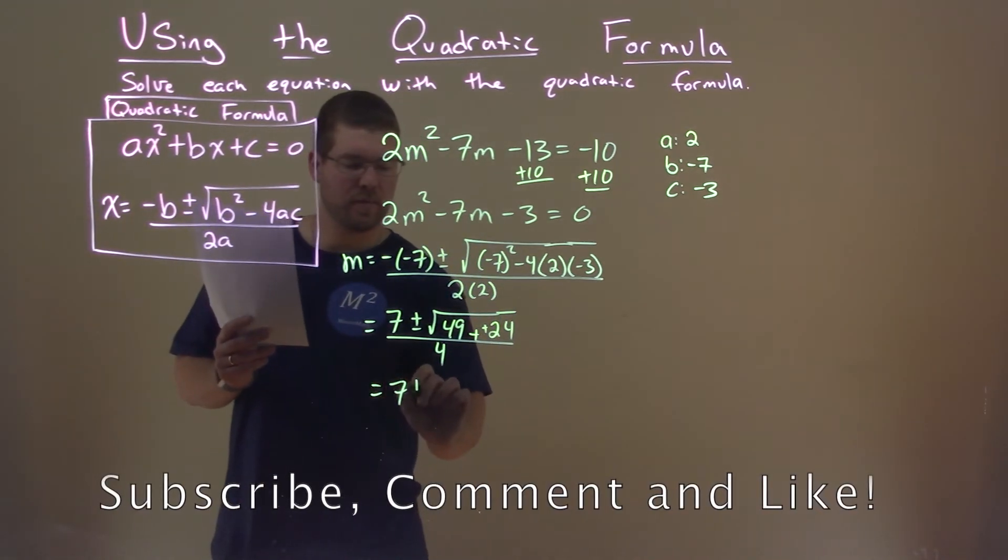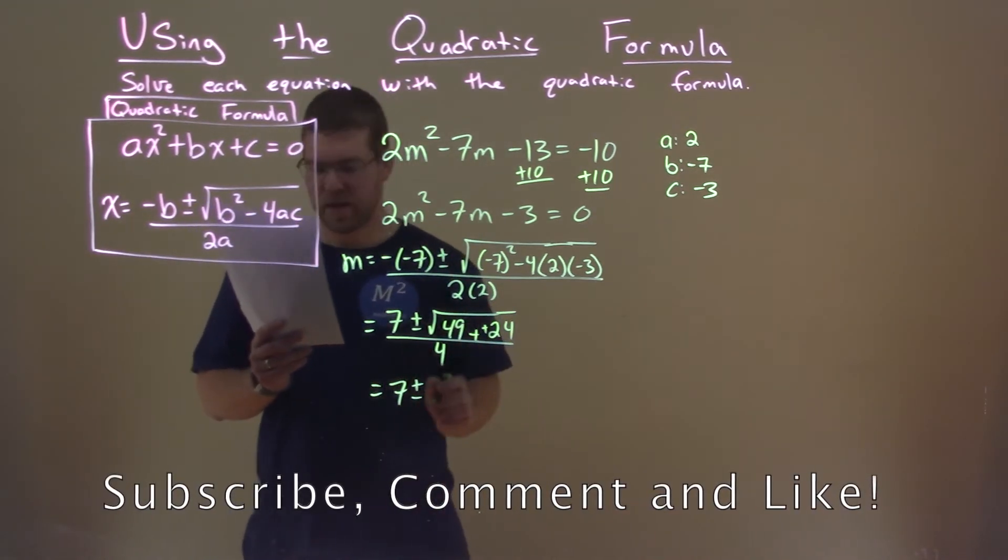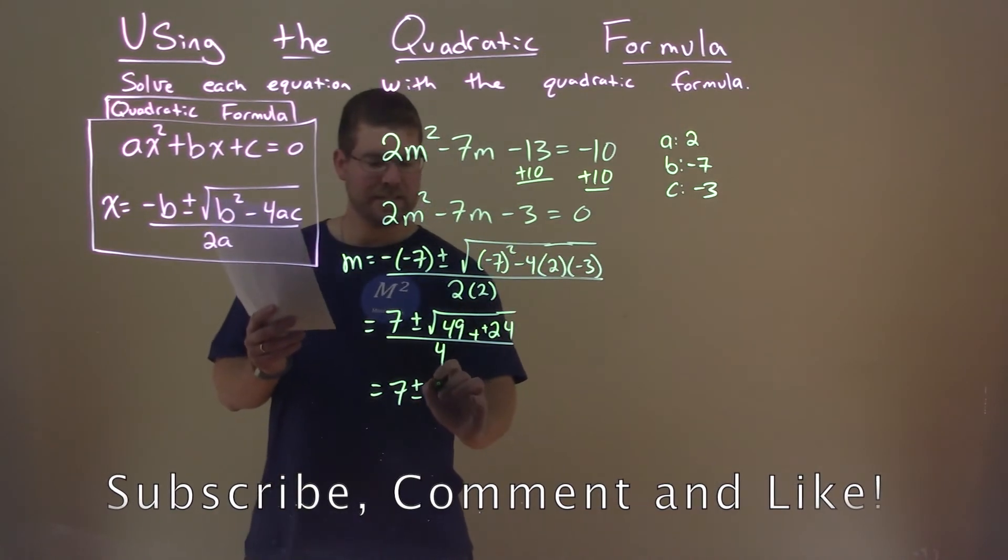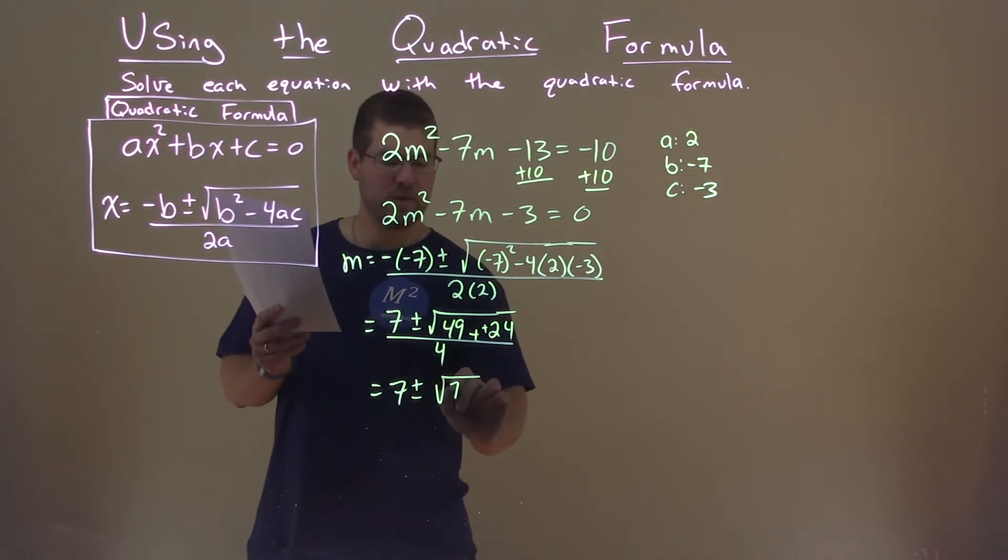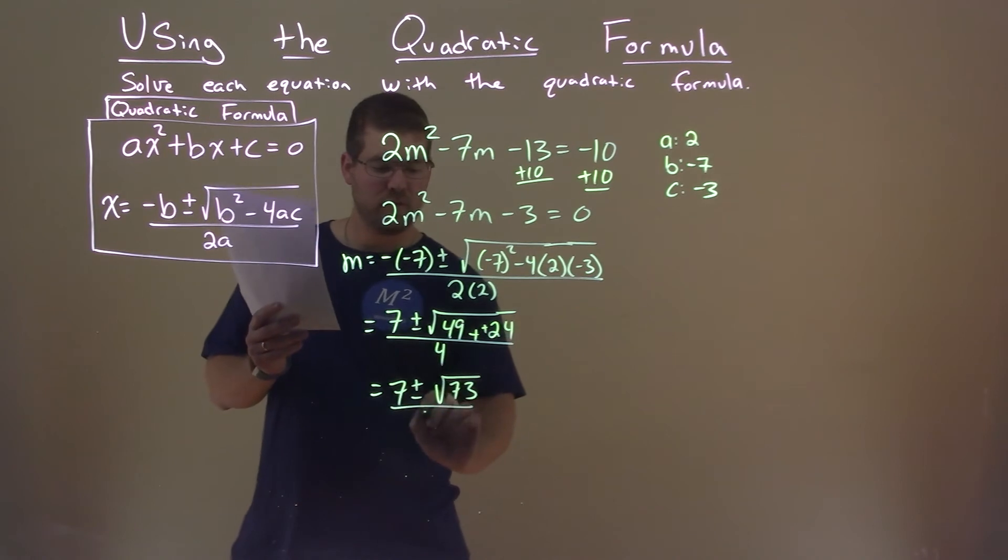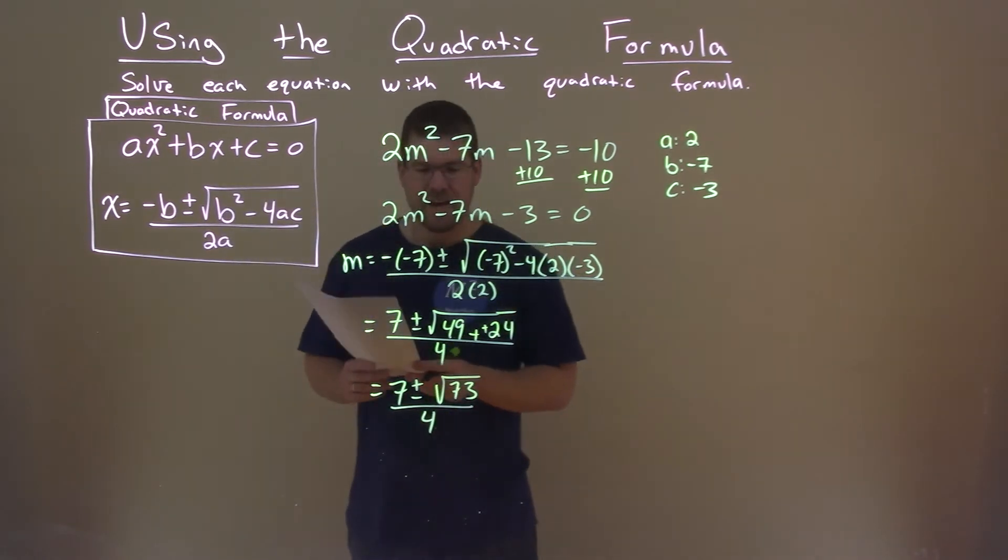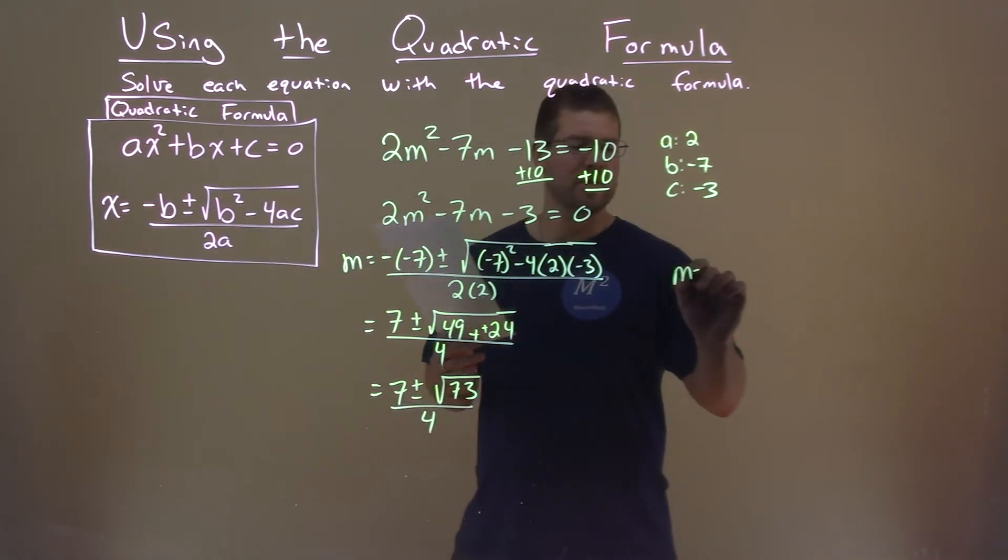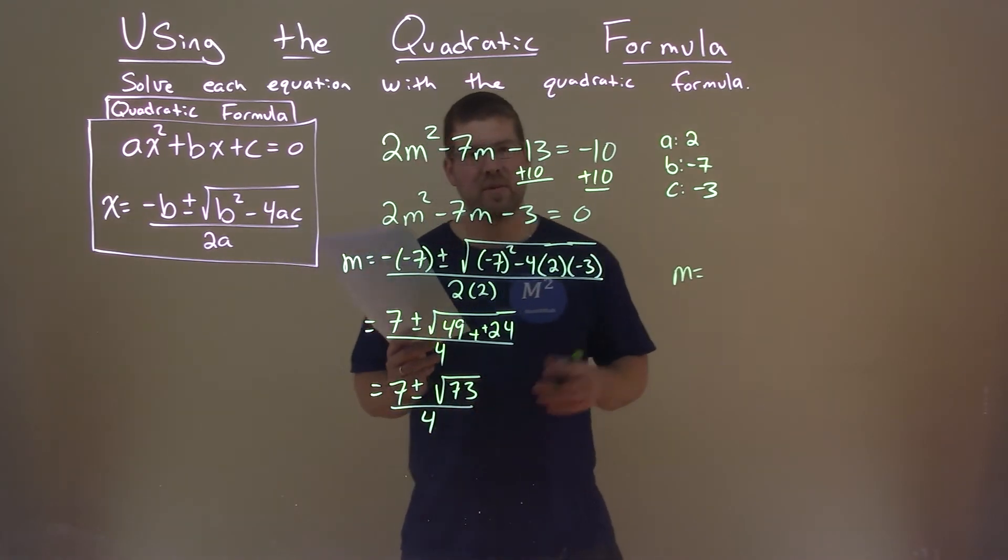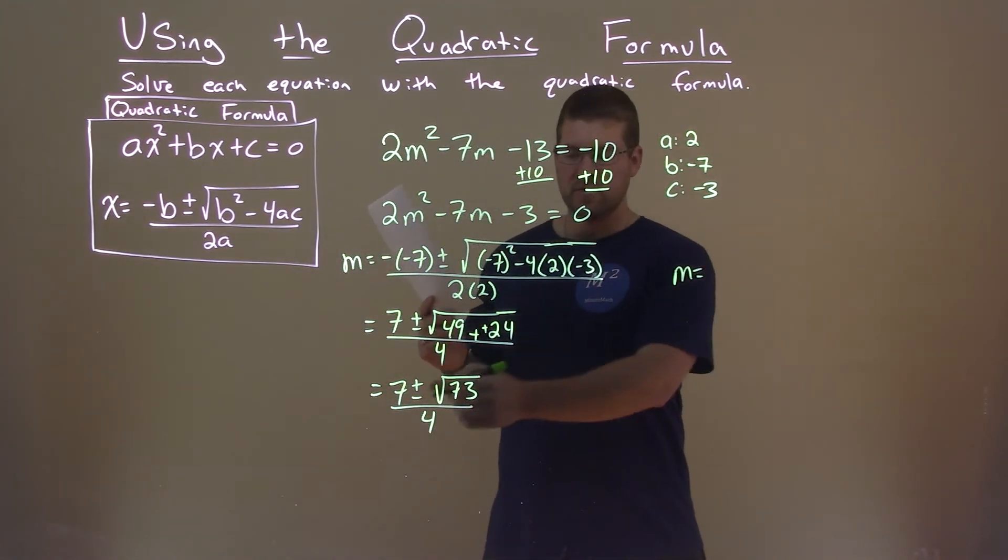Keep going. 7 plus or minus, let's simplify. 49 plus 24 is 73. So we have square root of 73 here, and that's over 4. We're pretty much done. Square root of 73 doesn't simplify anymore, so let's separate this out.